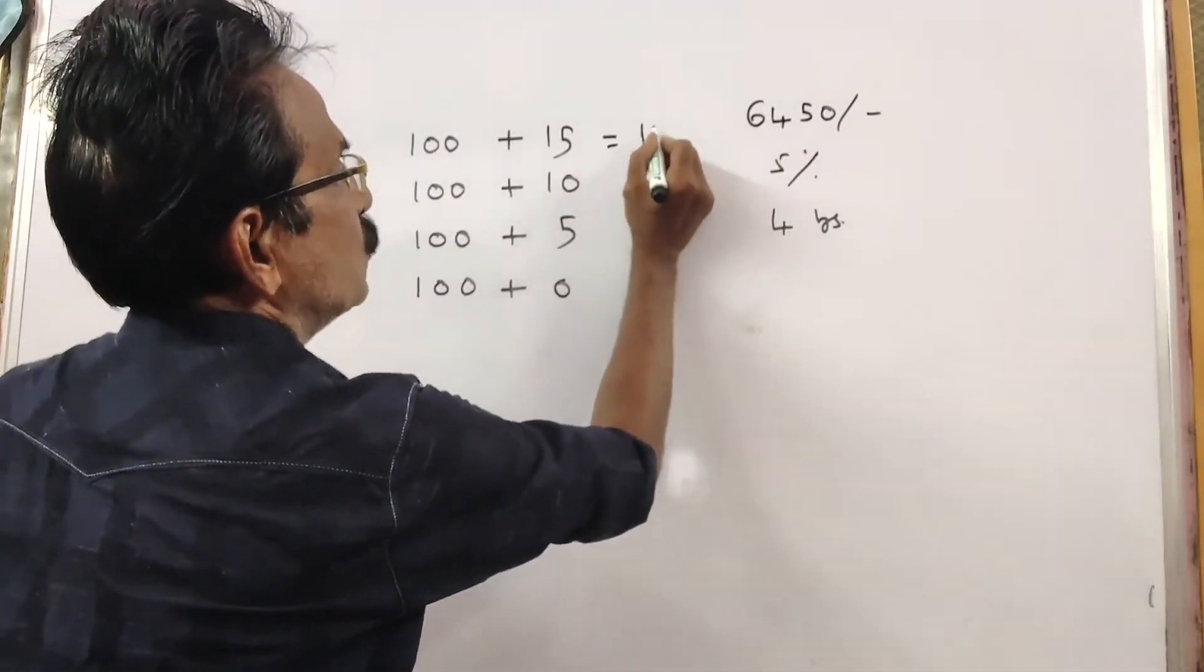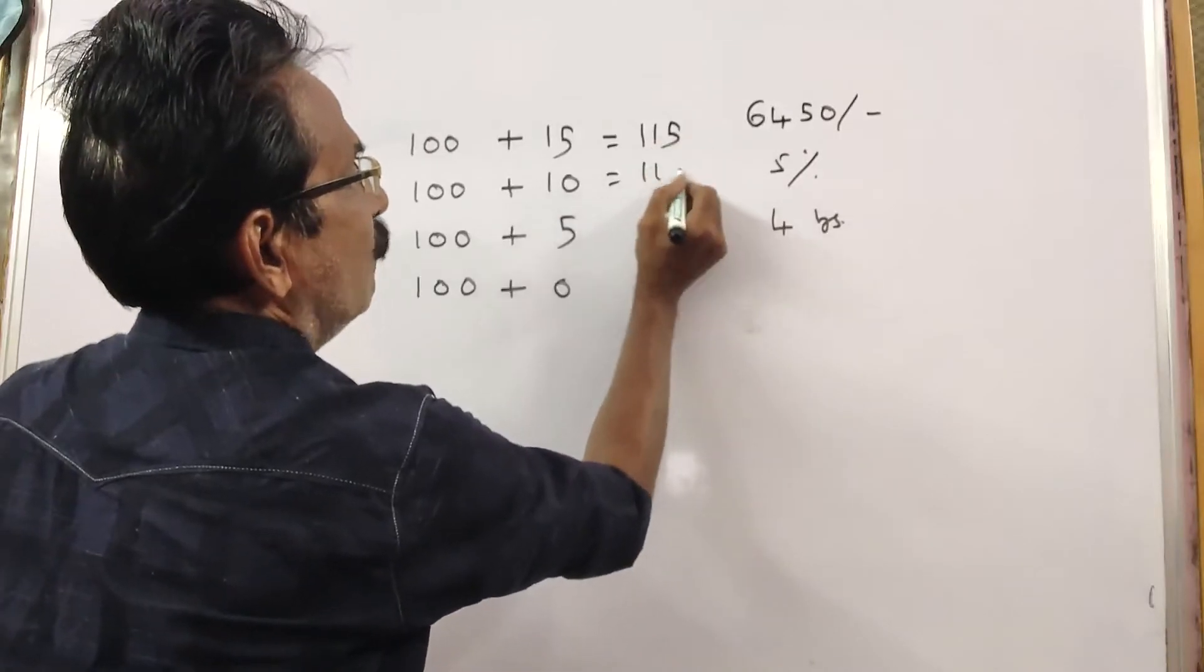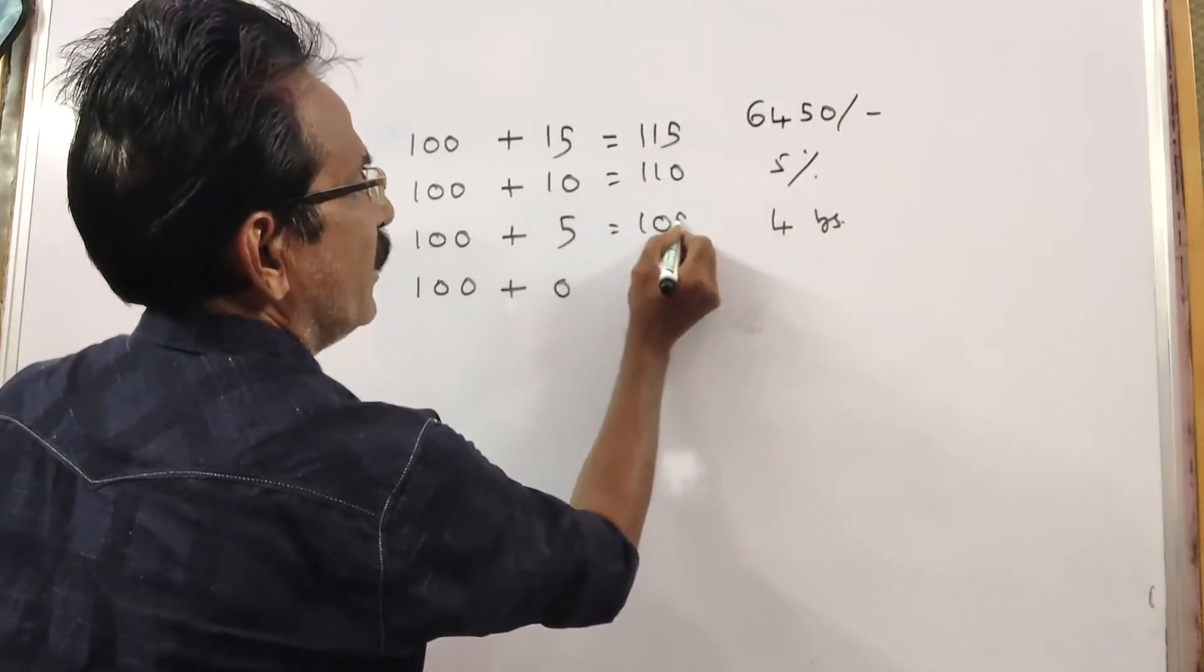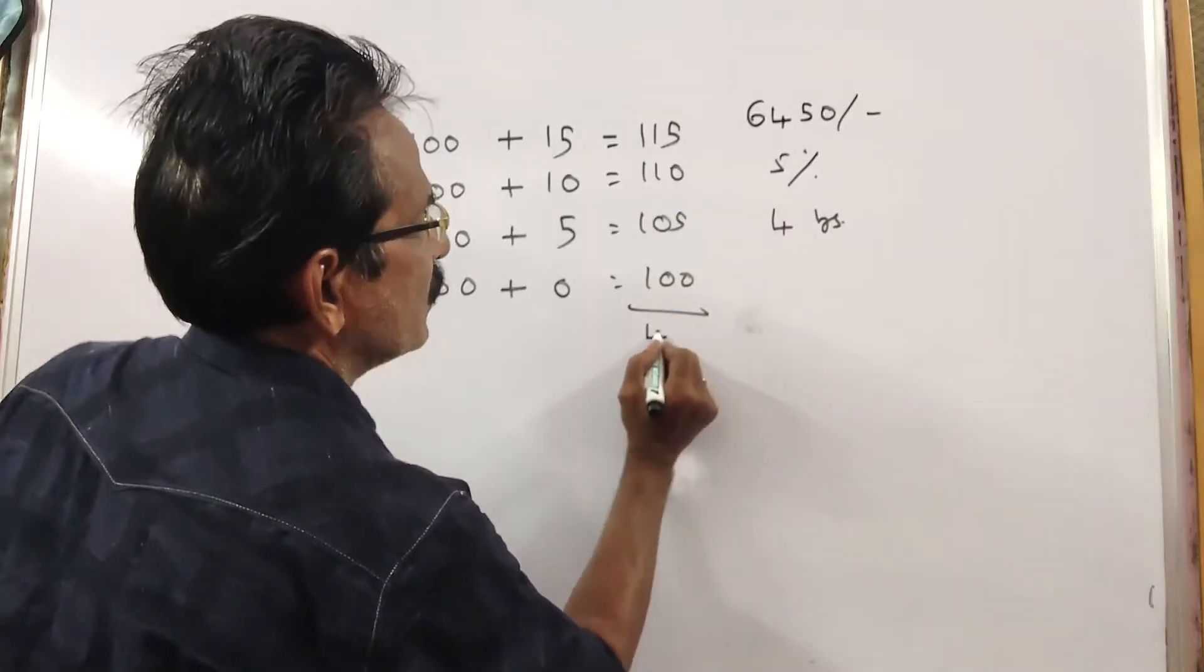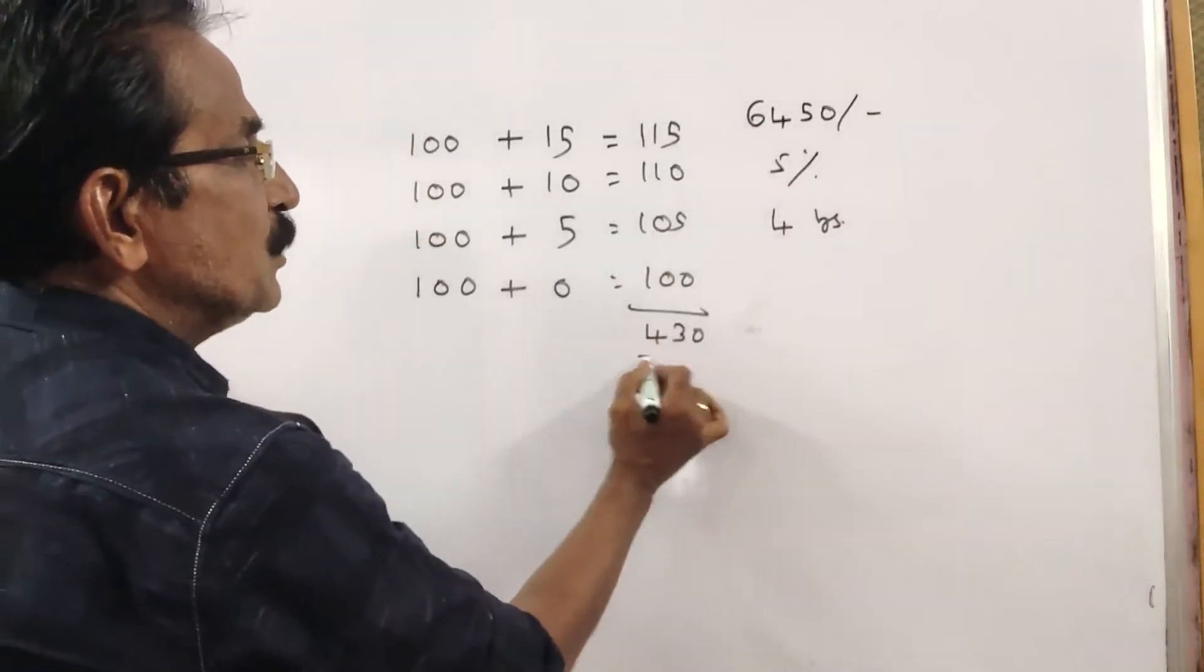See, the total amount comes to Rs. 115, 110, 105, 100. The total comes to Rs. 430.